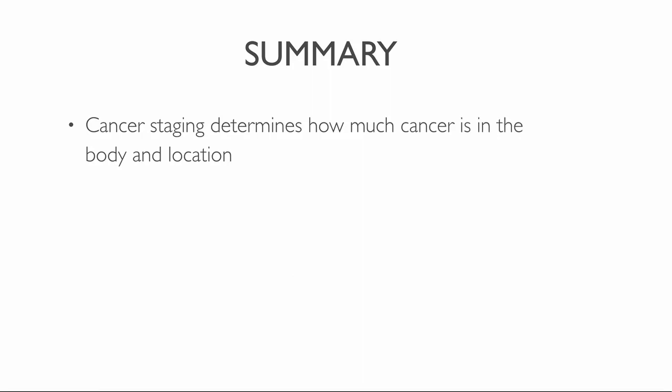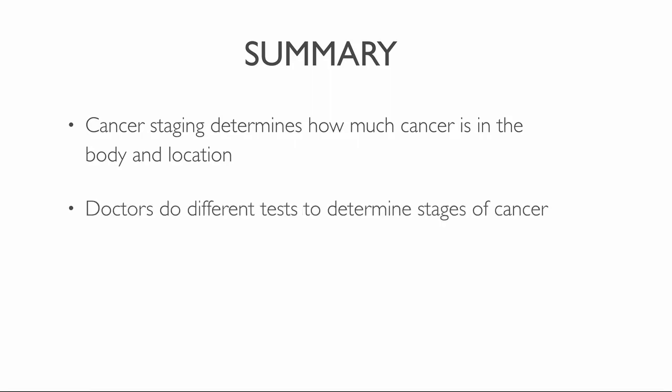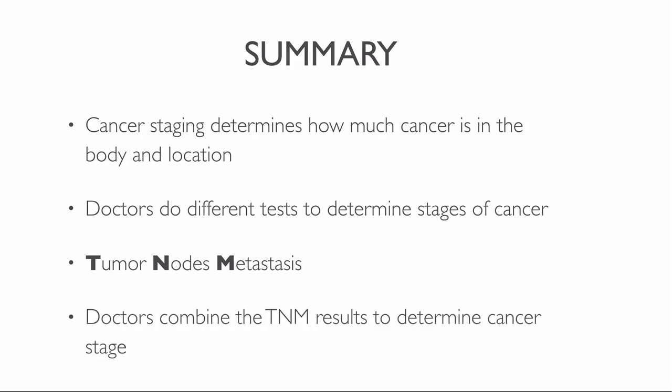Today you learned that cancer staging is a process of determining how much cancer is in the body and its location. Doctors perform different tests such as physical examinations to determine stages of cancer. The TNM system is the most common grading system, standing for Tumor, Nodes, and Metastasis. T plus a number zero to four describes the tumor's size and location; N plus a number zero to three explains whether cancer is found in the lymph nodes; and M indicates whether the cancer has metastasized. Doctors combine these TNM results to determine cancer stages one to four.